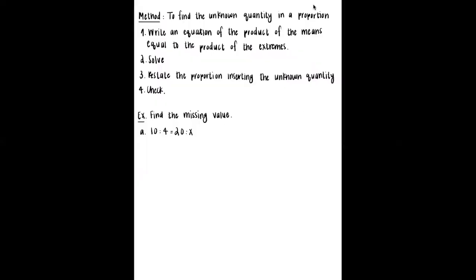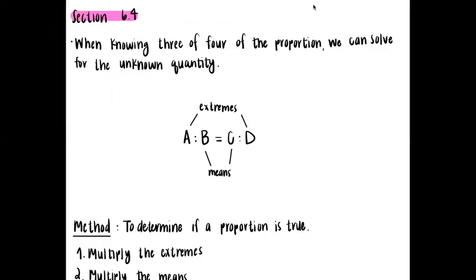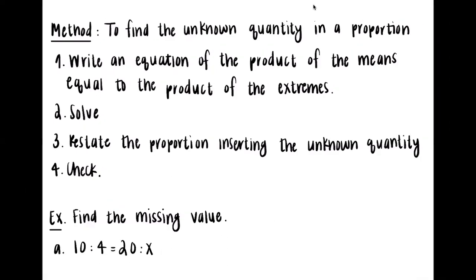As mentioned, when we know three of the four values in a proportion, we can solve for the unknown quantity. To find the missing piece, we write an equation of the product of the means equal to the product of the extremes, then solve that equation as normal — using techniques from chapter three. Then we restate the proportion with the known quantity and apply a check step.